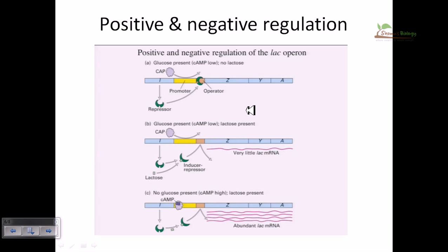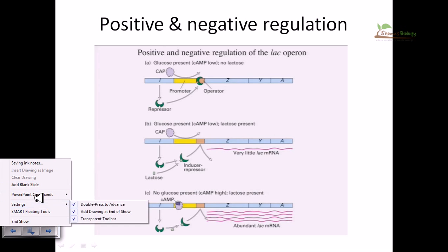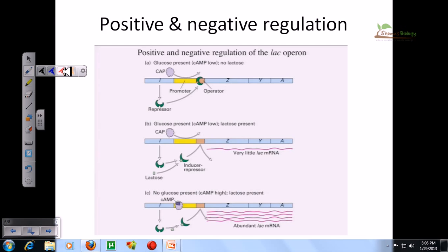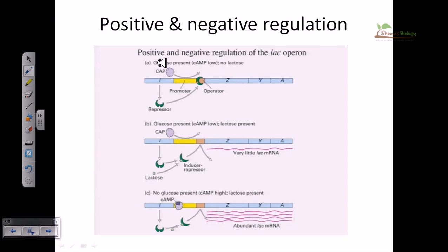Now we discuss positive and negative regulation of the lac operon. There is an inverse relationship between the level of cyclic AMP and glucose: higher glucose means lower cyclic AMP, and vice versa. Cyclic AMP acts as a positive regulator of the lac operon. When glucose is present and lactose is absent, there is low cyclic AMP and normal glucose metabolism proceeds.